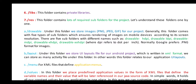Let's understand these folders one by one. The drawable folder draws the images for our project. Generally this folder comes with five types of subfolder which ensures rendering of images on mobile devices according to screen resolution: drawable-hdpi, drawable-ldpi, drawable-mdpi, drawable-xhdpi, and drawable-xxhdpi. Google prefers .png format for images. Then the Layout folder — under this folder we store the user interface layout for our Android project, written in XML format. We can store as many activity files as needed under this folder. Then Menu — an XML file that defines the application menu.